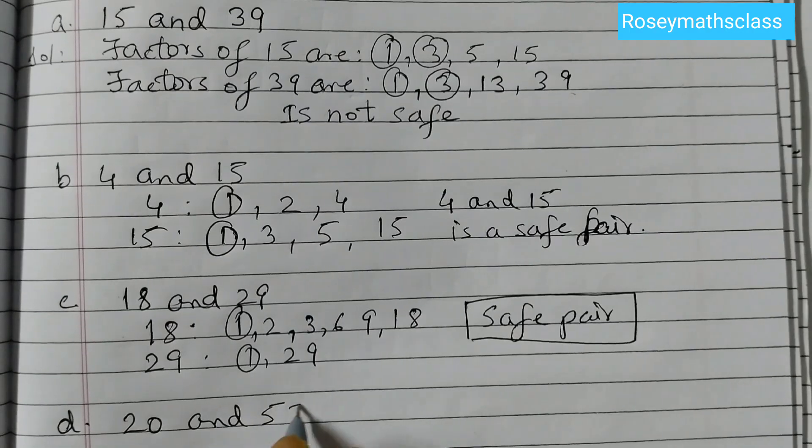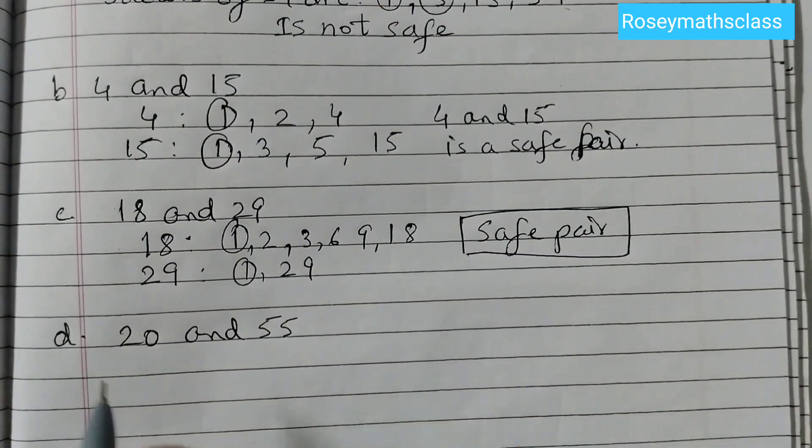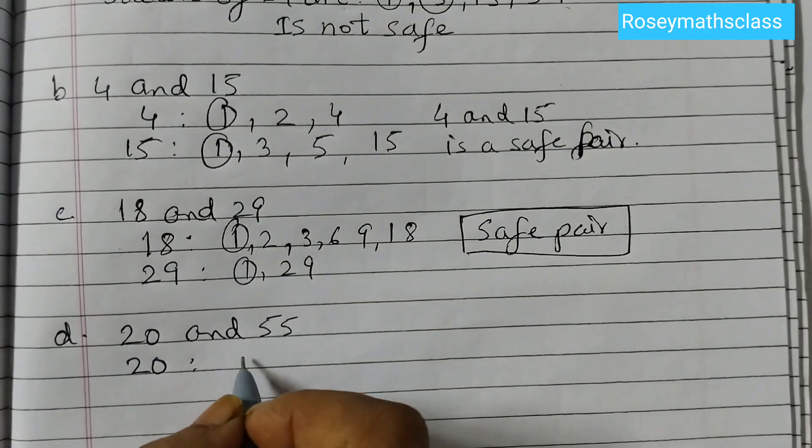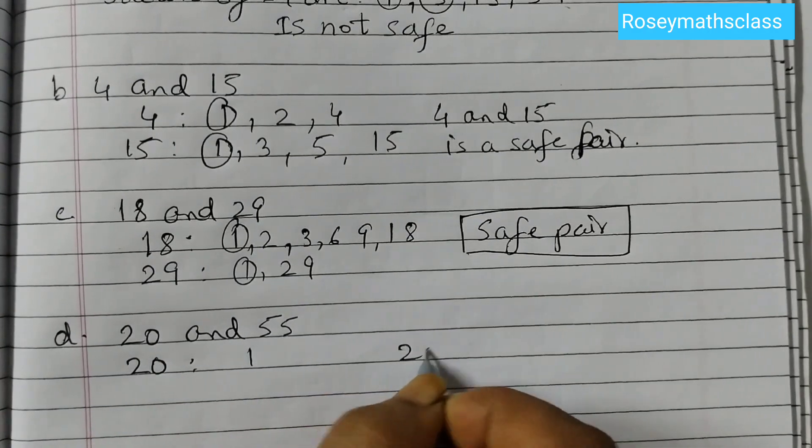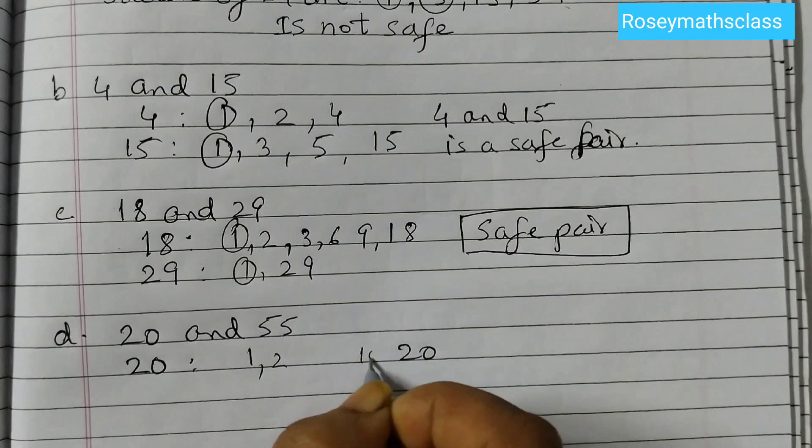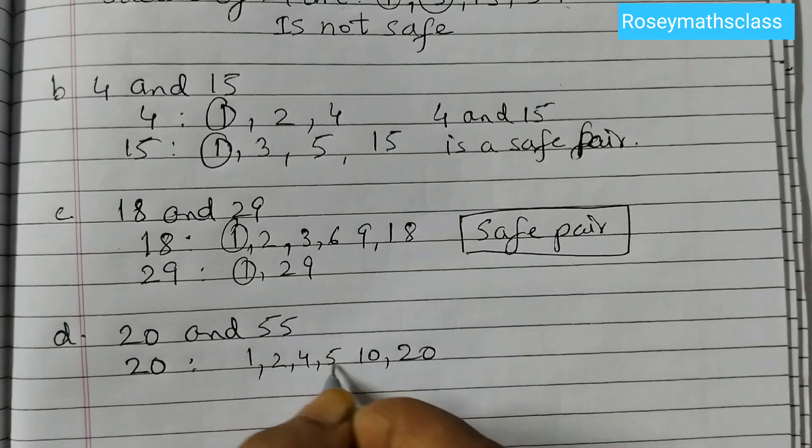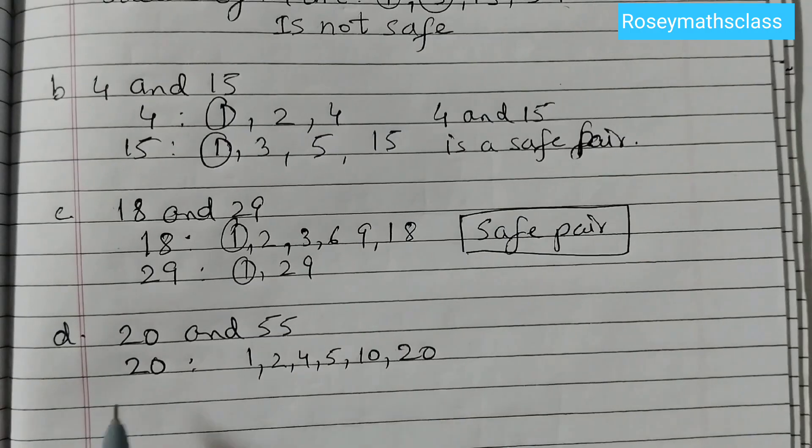20 and 55. Same way, you have to find out the factors of 20. Factors of 20 are 1 times 20, then 2 times 10, then 4 times 5. So we have 6 factors of 20.